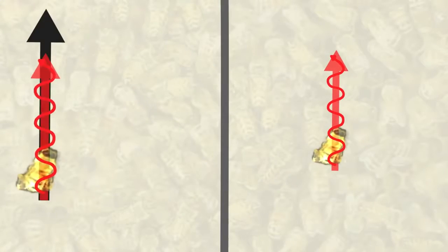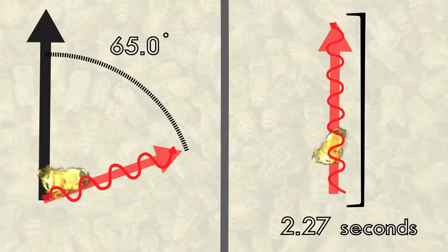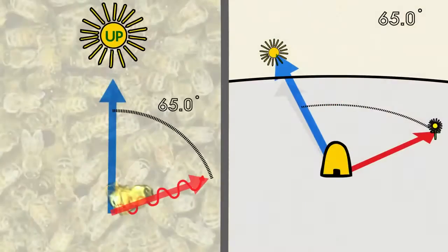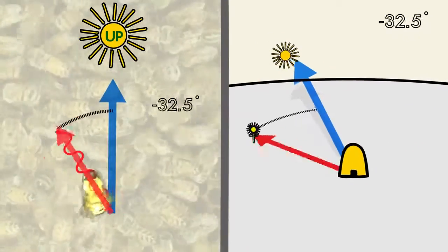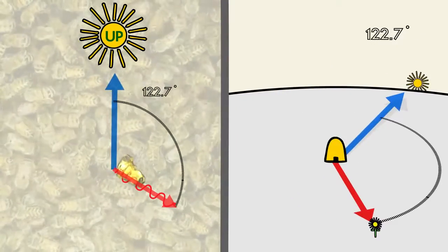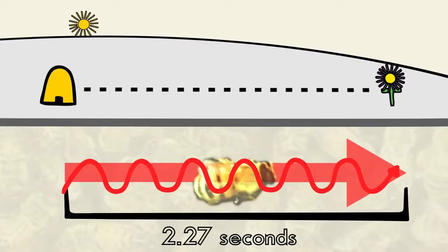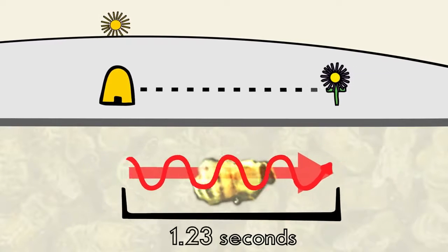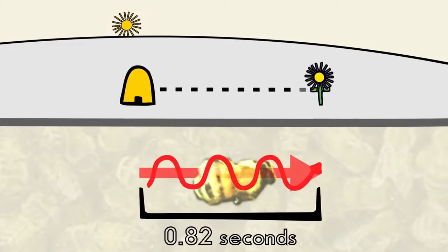Again, the information contained in a honeybee's dance consists of two parts. One, the orientation of the dance, which describes what angle to travel away from the sun. And two, the duration of the middle part of the dance, which expresses the distance of a food source away from the hive.